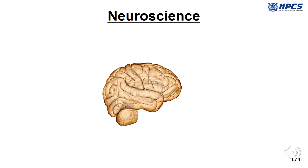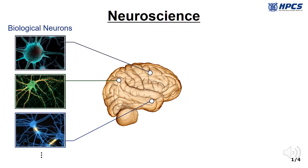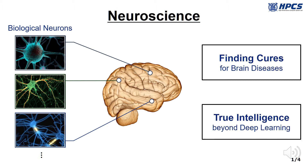These days, everybody is working on deep learning, but we have a different approach. We are building an electronic brain. If we can make an electronic brain, many wonderful things are possible. For example, we can find cures for brain diseases or realize true intelligence beyond deep learning.